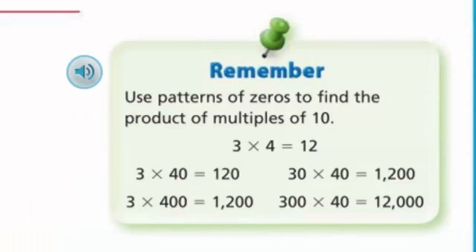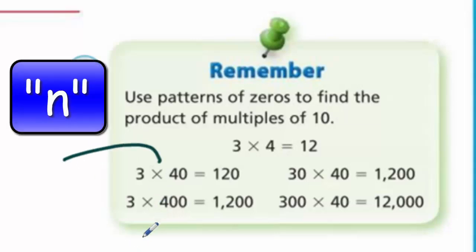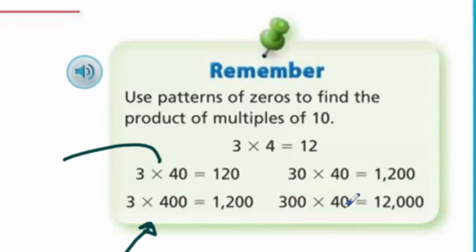Remember: use patterns of zeros to find the product of multiples of 10. For example, 3 times 4 equals 12; 3 times 40 equals 120; 3 times 400 equals 1,200. We kind of covered this by looking at simple facts and applying powers of 10. Let's go on to the next page.